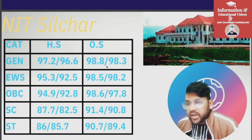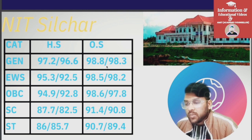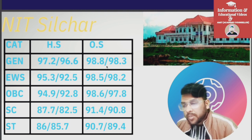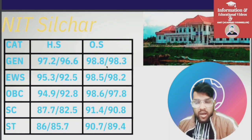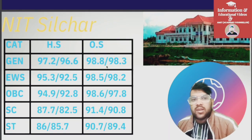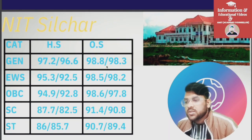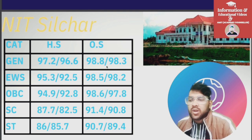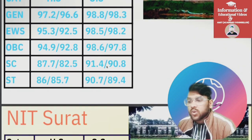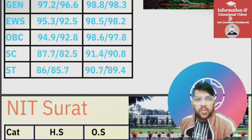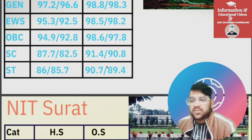These are very accurate data because it takes lots of time and effort. After analyzing the last three to four years' trends and considering the current year trend, I am providing the minimum percentile to get into the CS branch in each NIT for all categories — homestate, other state, male, and female.